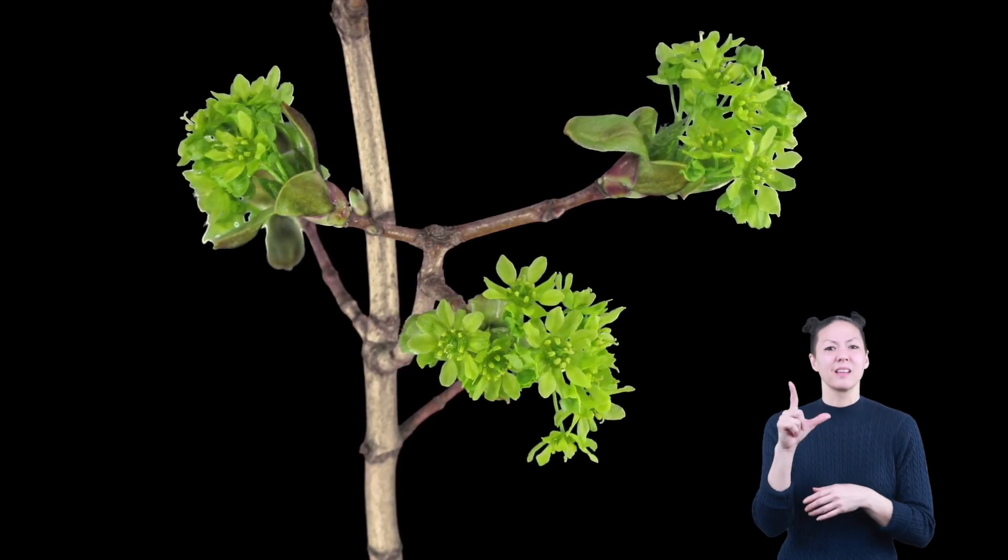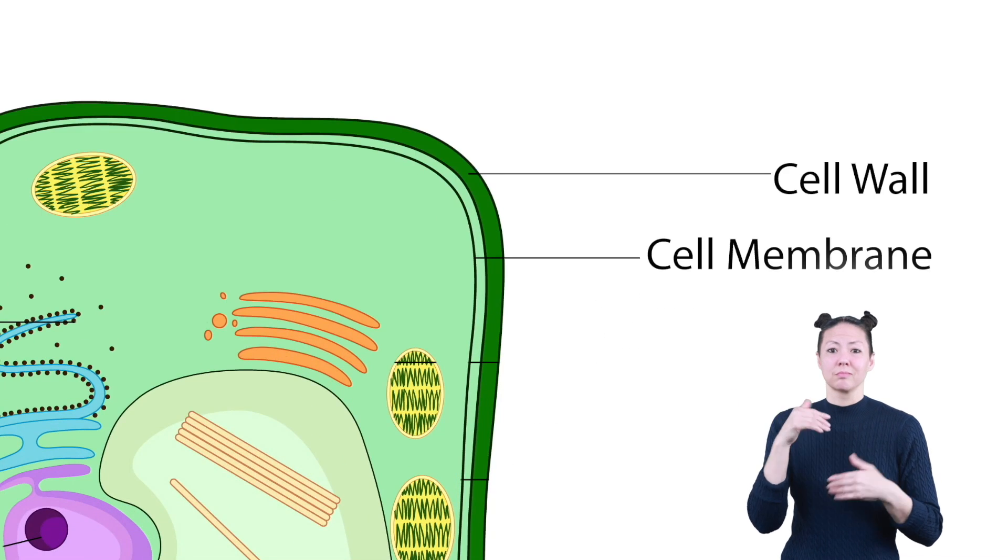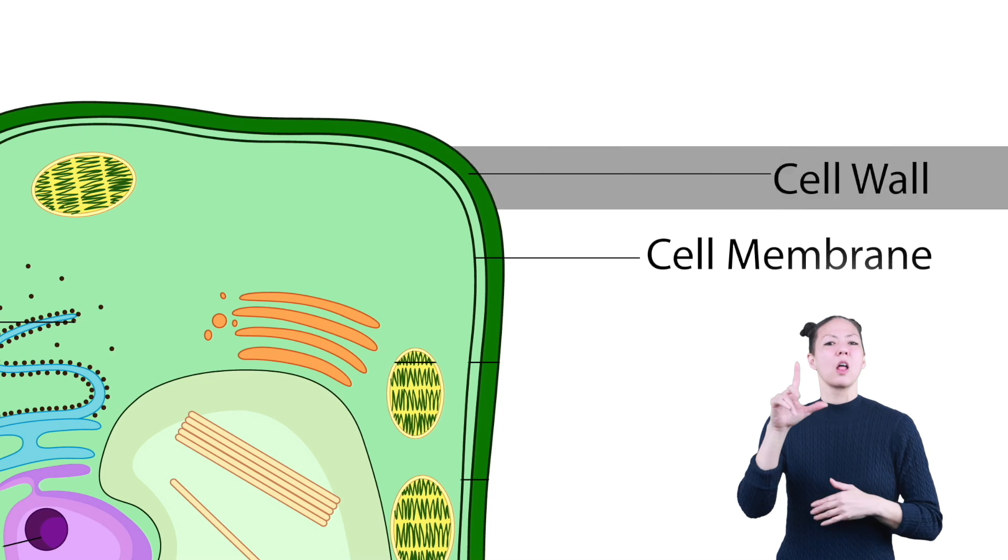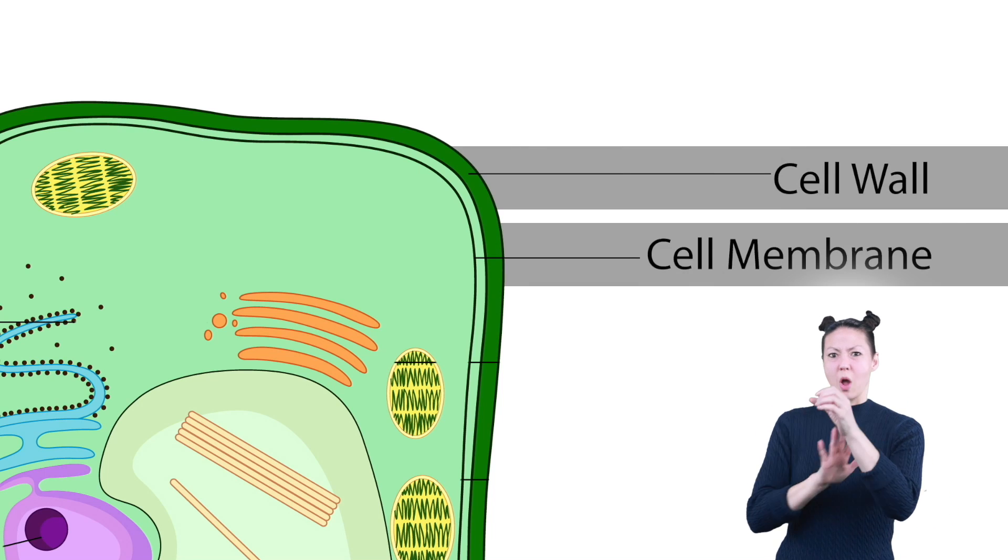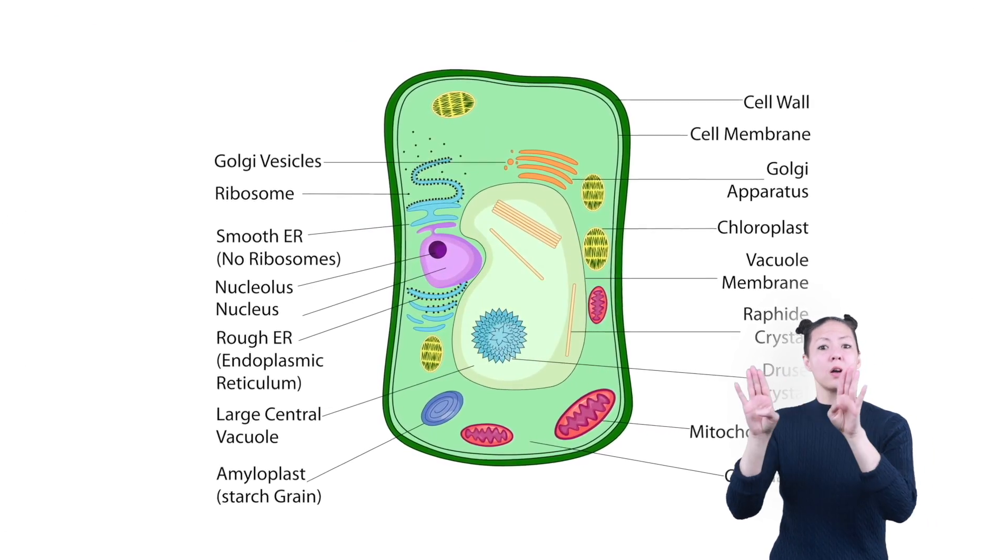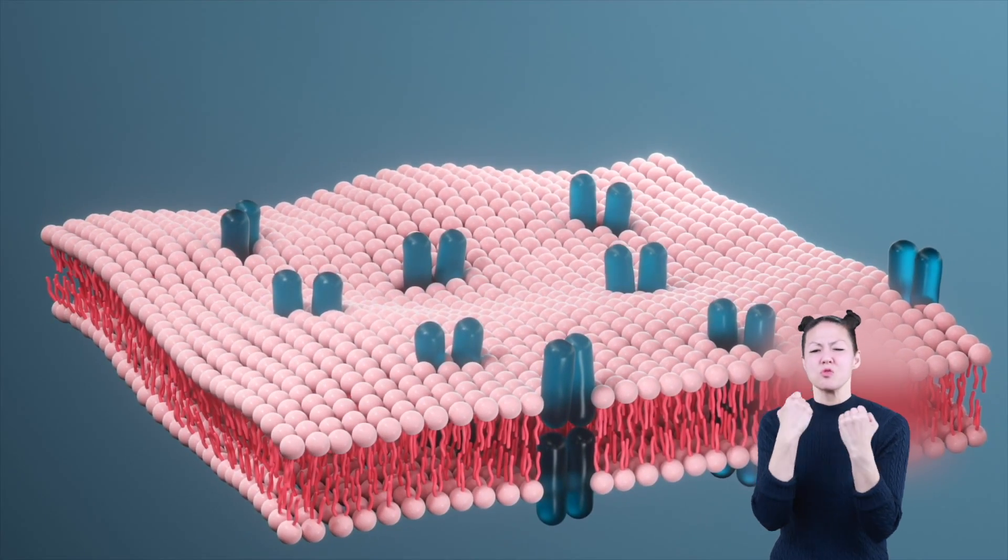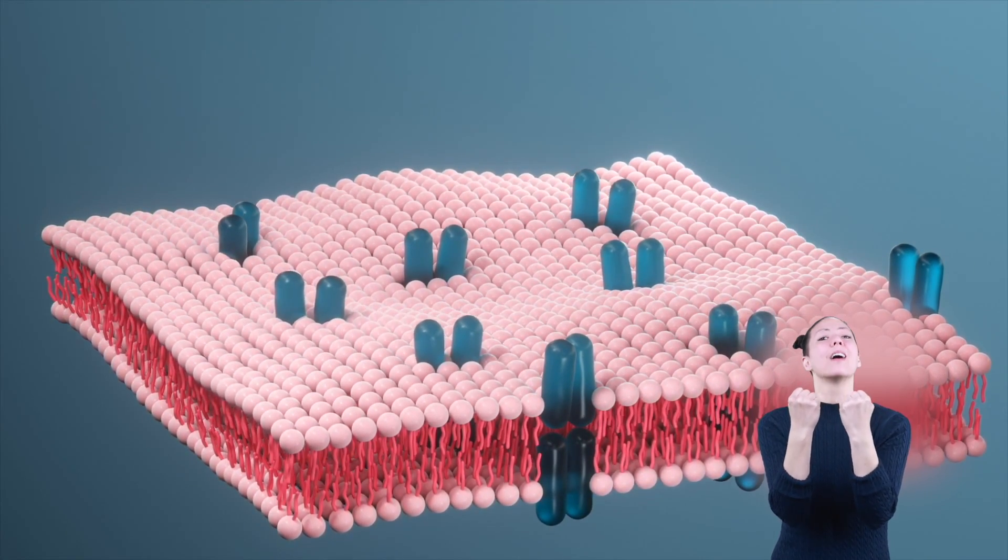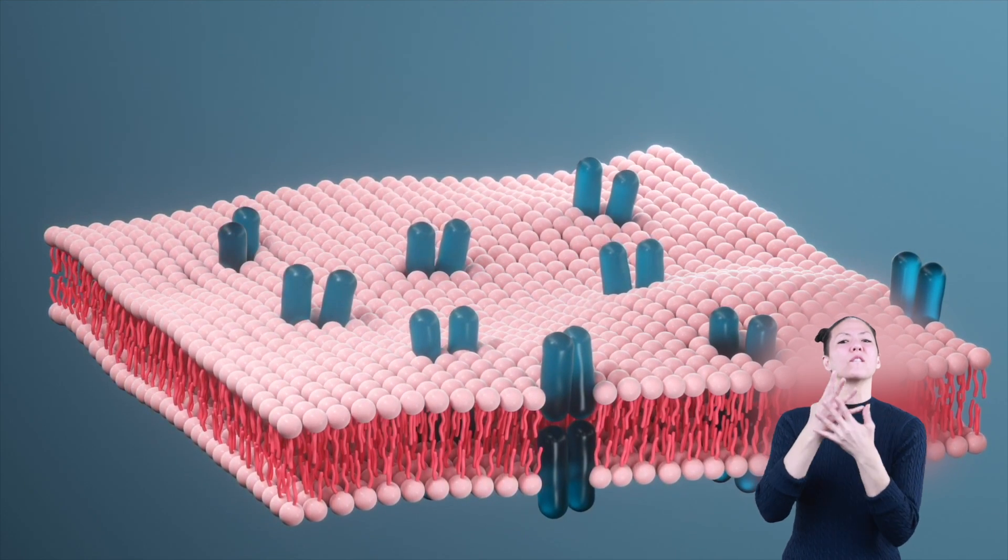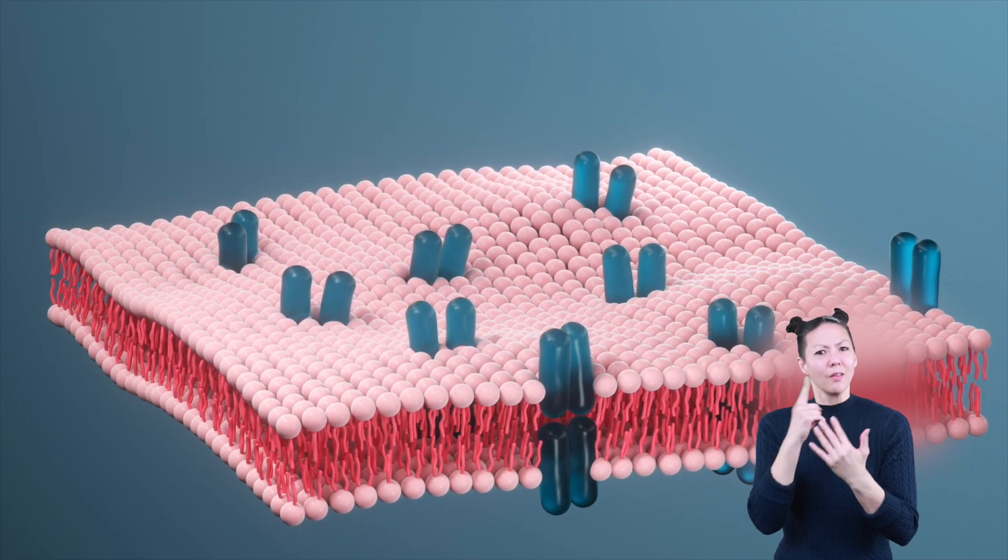Plant cells are unique because they have two additional parts that animal cells don't. They contain another protective barrier called the cell wall. The cell wall surrounds the cell membrane. Both the cell wall and the cell membrane protect and support the cell. The cell wall is made of a strong material that helps the cell keep its shape. It also filters molecules that pass in and out of the cell.